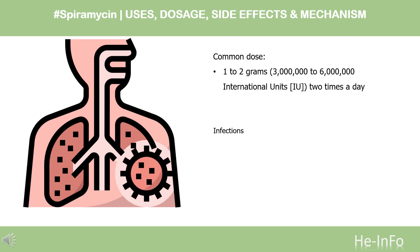Children: use and dose must be determined by your doctor. For rectal dosage form (suppository), for treatment of infections: Adults and children 12 years of age and over, 2 × 750 milligrams (1,950,000 IU) suppositories per day. Children up to 12 years of age, 2 or 3 × 500 milligrams (1,300,000 IU) suppositories per day. Newborns: dose is based on body weight; the usual dose is 250 milligrams (650,000 IU) suppository per 5 kilograms (11 pounds) of body weight, once a day.